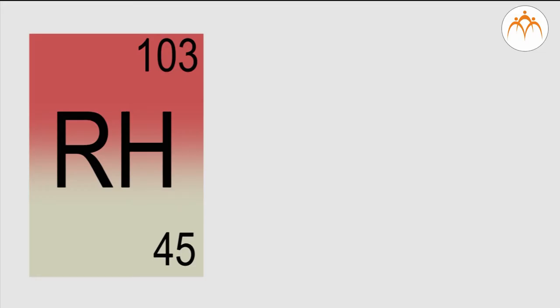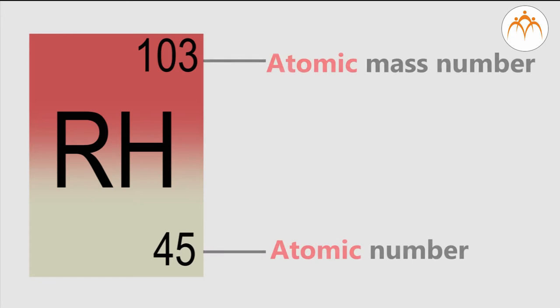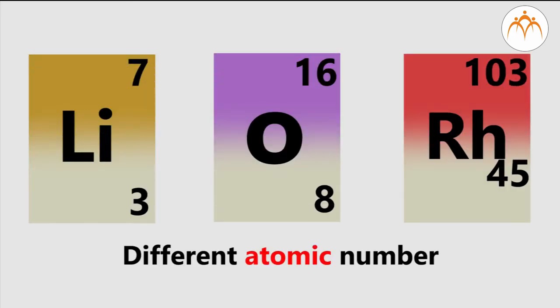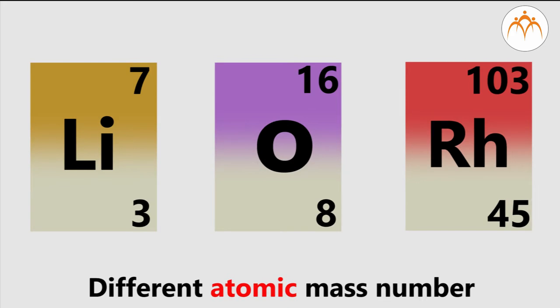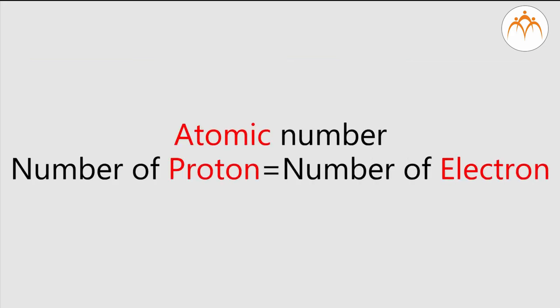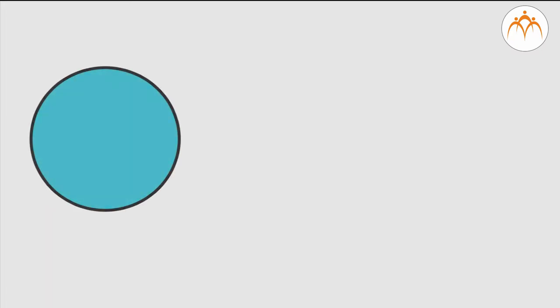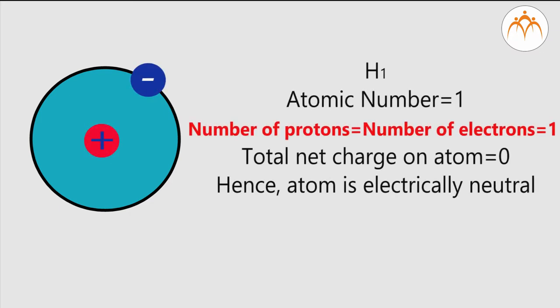To describe an atom, two terms are used: the atomic number and atomic mass number. Atomic number is the fundamental characteristic of an element. Atomic number is equal to the number of protons, which is equal to the number of electrons. It is defined as the number of protons in the atom, and is also equal to the number of electrons in the neutral atom.